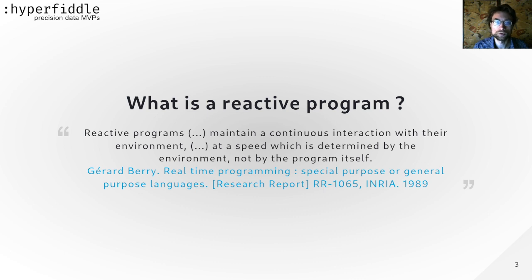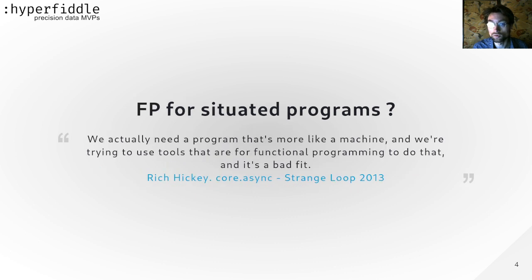This is the problem space: we want to make reactive programs. Reactive programs maintain a continuous interaction with their environment at a speed which is determined by the environment, not by the program itself. This is very close to what Rich used to call situated programs, and this is what he was saying eight years ago about usage of functional programming in this context.